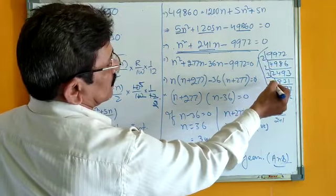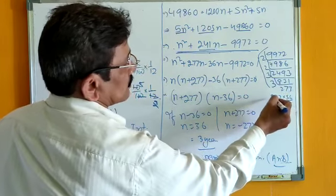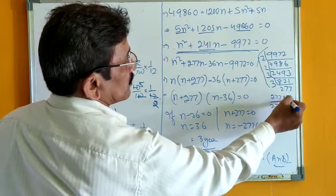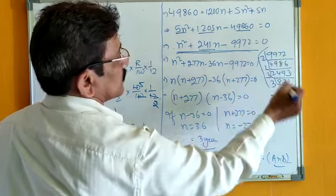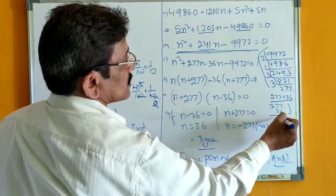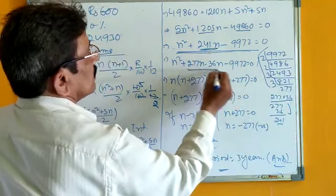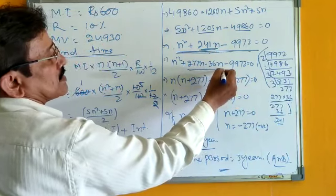So, 2, 2, 3, 3 are the prime factors giving 277 and 36. As per the factorization method, 277 into 36 equals 9970. The difference is 241, 277 minus 36 equals 241. So, in place of this, you can write 277N minus 36N.